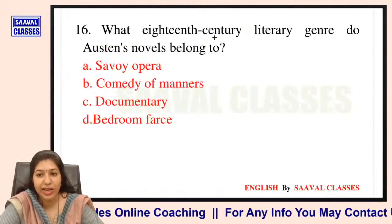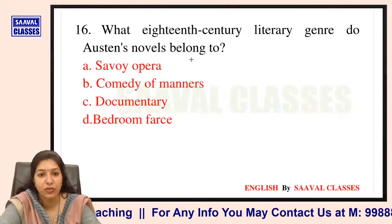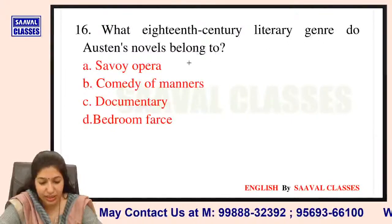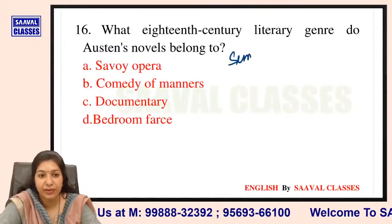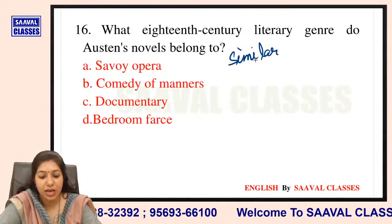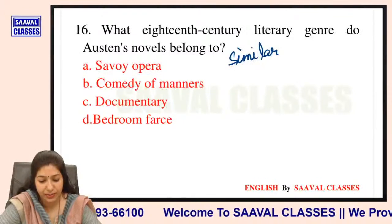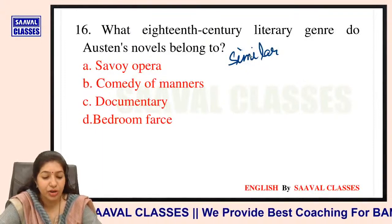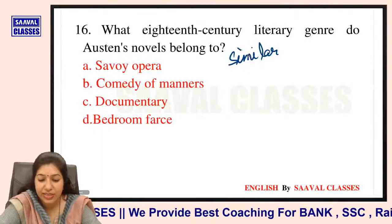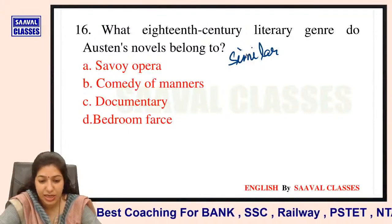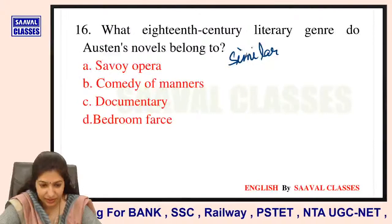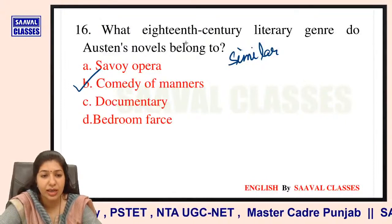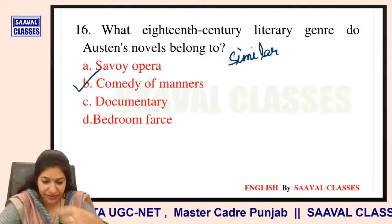Question number 16: What 18th century literary genre do Austen's novels belong to? Options are Savoy Opera, Comedy of Manners, Documentary, ya Bedroom Farce? Jane Austen ke novels Romantic Age ke novel writers mein aate hain. Comedy of Manners — Jane Austen ke novels ka genre Comedy of Manners hai.